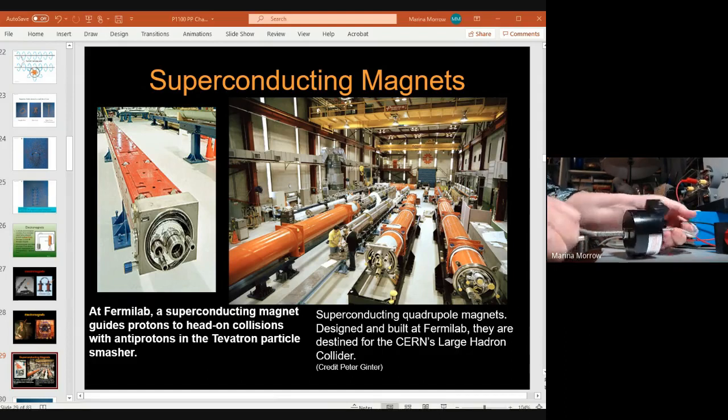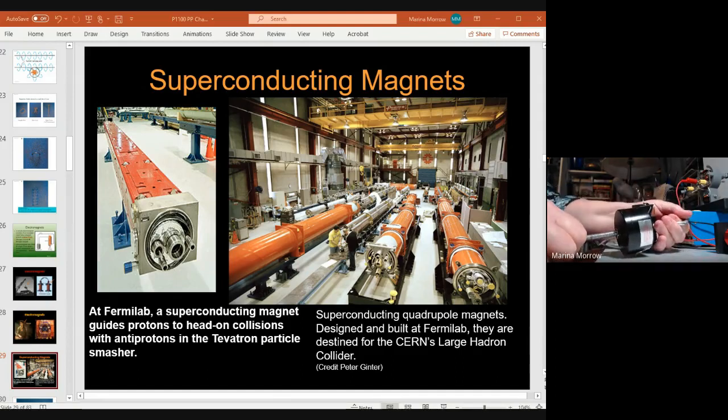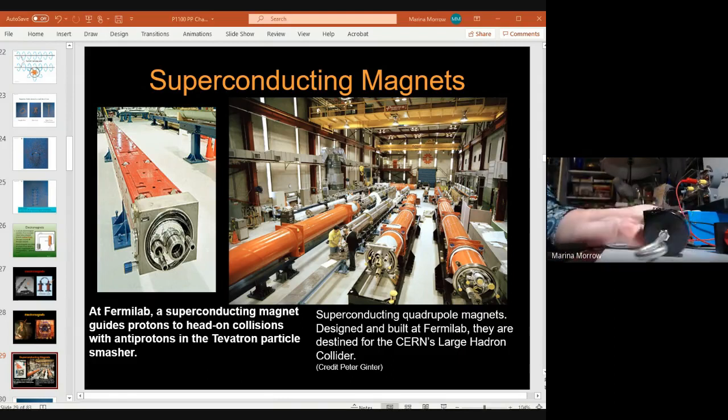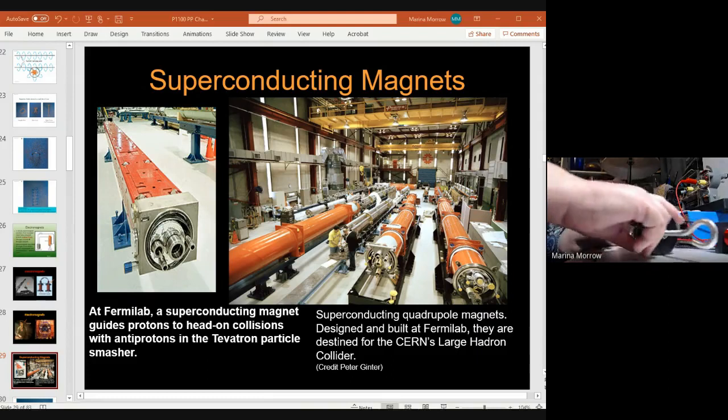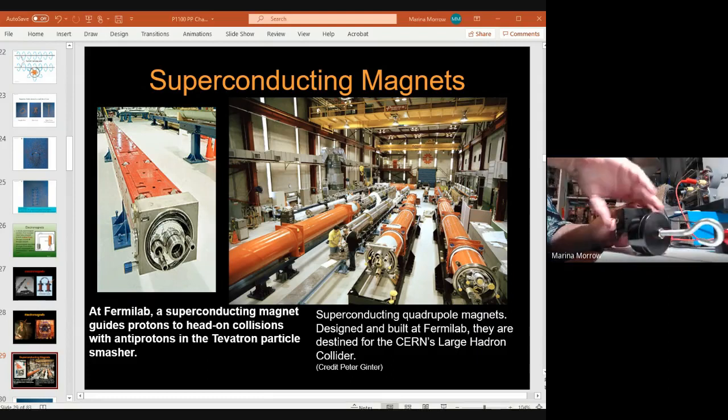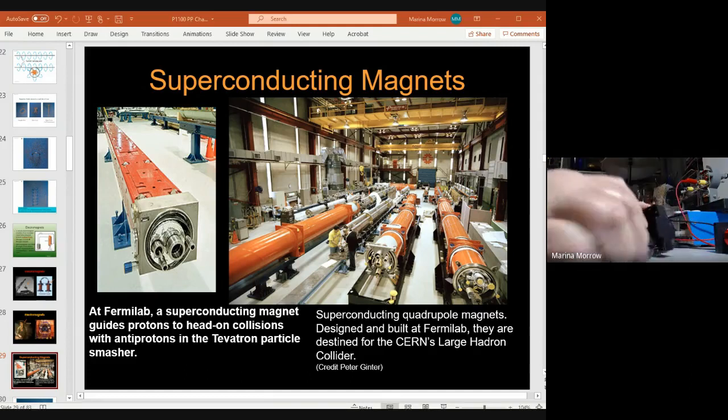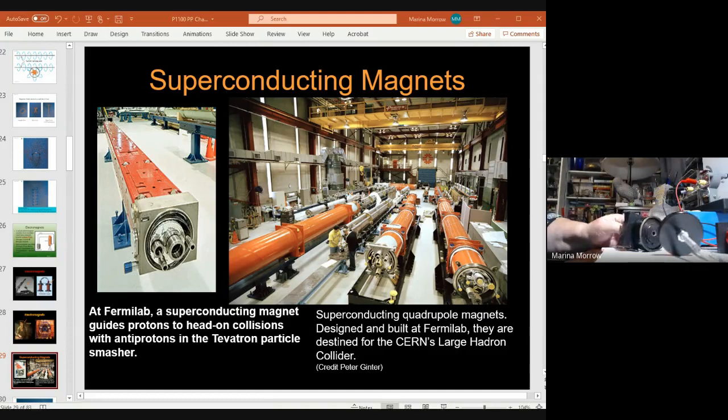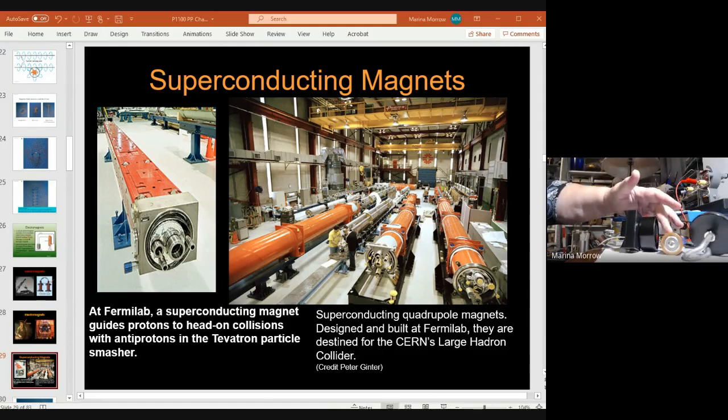The easiest way to get it apart is to take the battery out. So if I take out the battery, then the plates come apart. That's the idea with an electromagnet - a coil of wire, run some electricity through it, and now it's a magnet.